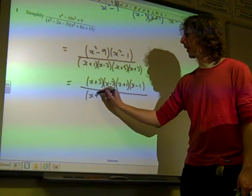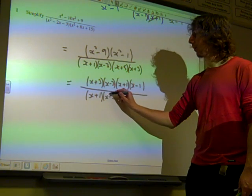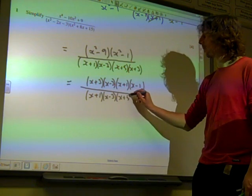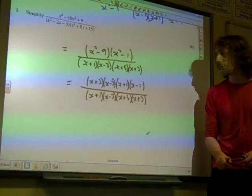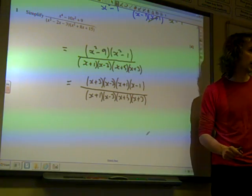and then down here we've got x plus 1, x minus 3, x plus 5, x plus 3. If we have common factors on the top and bottom we can cancel them.